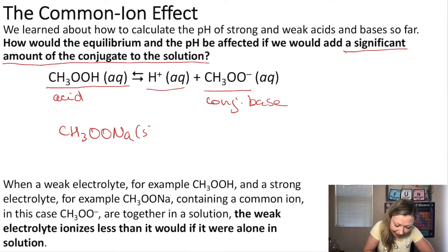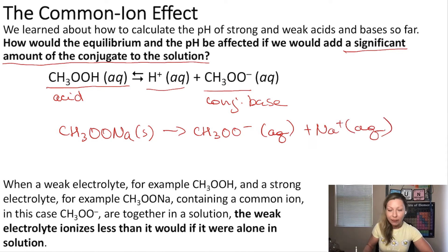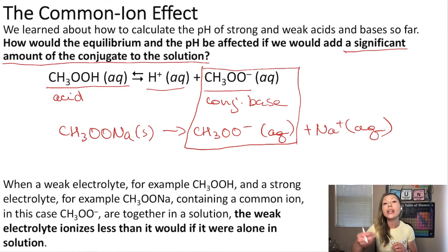When it is in solution, it's going to dissociate into the acetate ion, CH3COO- aqueous, plus Na+ aqueous ions. So this means I'm going to increase the concentration of the acetate ion in my solution. We learned from Le Chatelier's principle that when we increase the concentration of one of the products in the reaction, the equilibrium will start shifting to the left towards the reactants. So what will happen to the pH in this case?